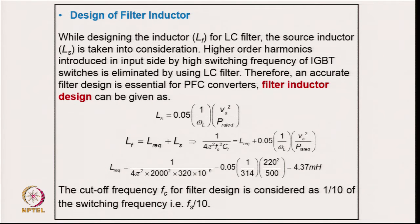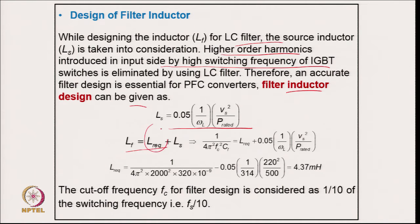Coming to the EMI filter inductor design: while designing the inductor for the LC filter, the source inductor is taken into consideration. Higher-order harmonics introduced by the switching frequency are eliminated by the LC filter. The filter inductor is calculated from the relation L_total = V_rms² / P × (1 / (2πf_c)), with the cutoff frequency at one-tenth of the switching frequency. The total inductance value is 4.73 mH, giving a required inductance for the filter. The cutoff switching frequency is set at one-tenth of 20 kHz to eliminate all higher switching frequency harmonics.